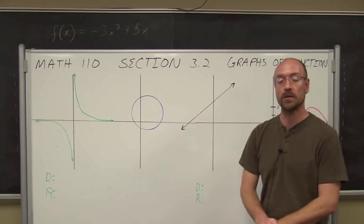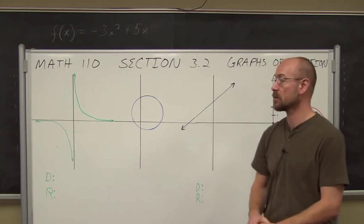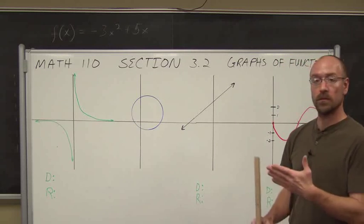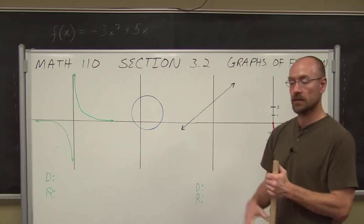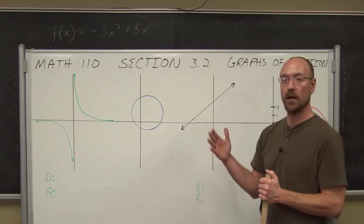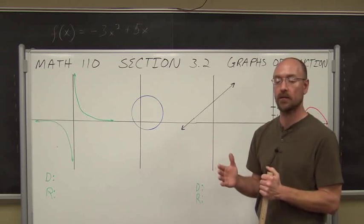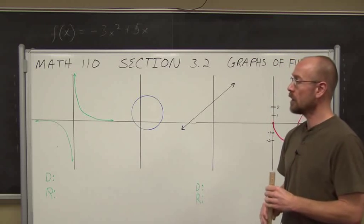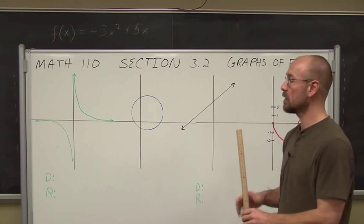One of the tests we can do is called the vertical line test. We define a function as each x corresponding to only one y — that is the definition of a function. So what that means is x doesn't repeat.